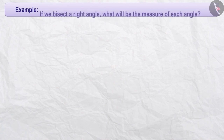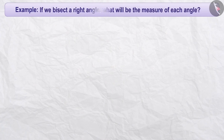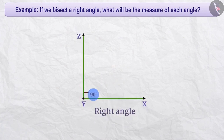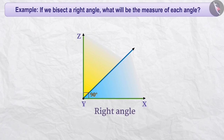Next example: If we bisect a right angle, what will be the measure of each angle? We know that a right angle measures 90 degrees. If we bisect it, we get two equal parts, and each angle will measure 90 ÷ 2 = 45 degrees.